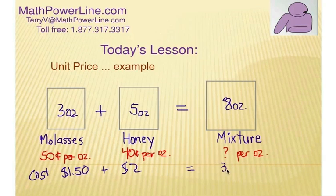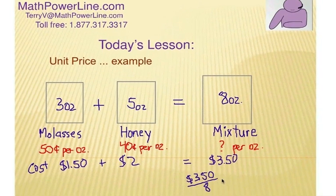So here's the strategy. We want to figure out the total cost of the ingredients. We want to find out the total ounces. And then we're going to have it as a price, a unit price. So we're going to take the cost, $3.50, and divide it by the amount, which is eight.